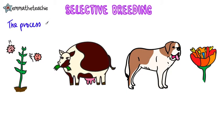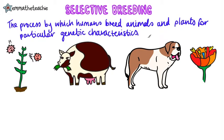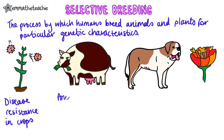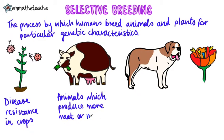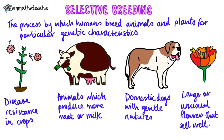Selective breeding is the process by which humans breed animals and plants for particular genetic characteristics. There are four examples in the specification to learn: disease resistance in crops, animals which produce more meat or milk, domestic dogs with gentle natures, and large or unusual flowers that will sell well.